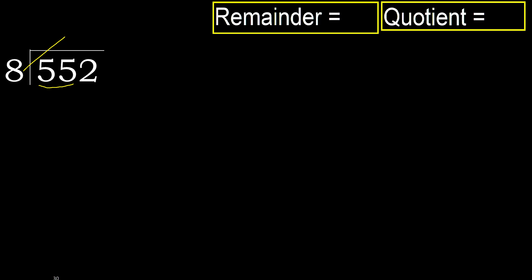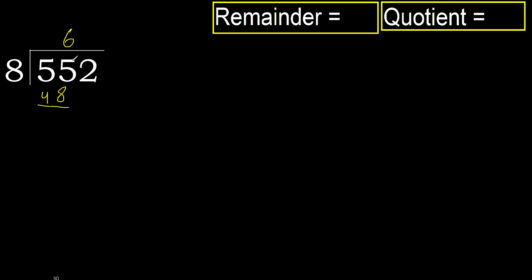8 multiply by 8: 64 is greater. Multiply by 7: 56 is greater. Multiply by 6: 48 is not greater. OK, subtract 55 minus 48 equals 7. Bring down next digit — 72.